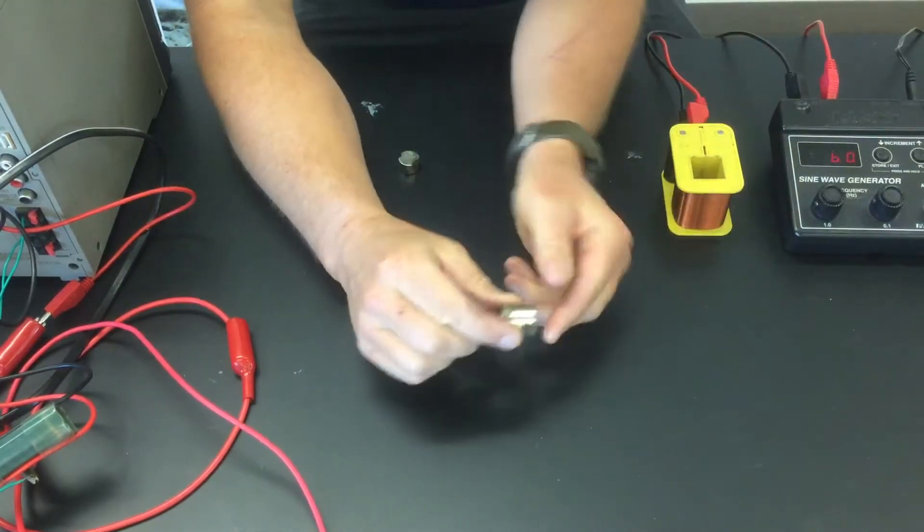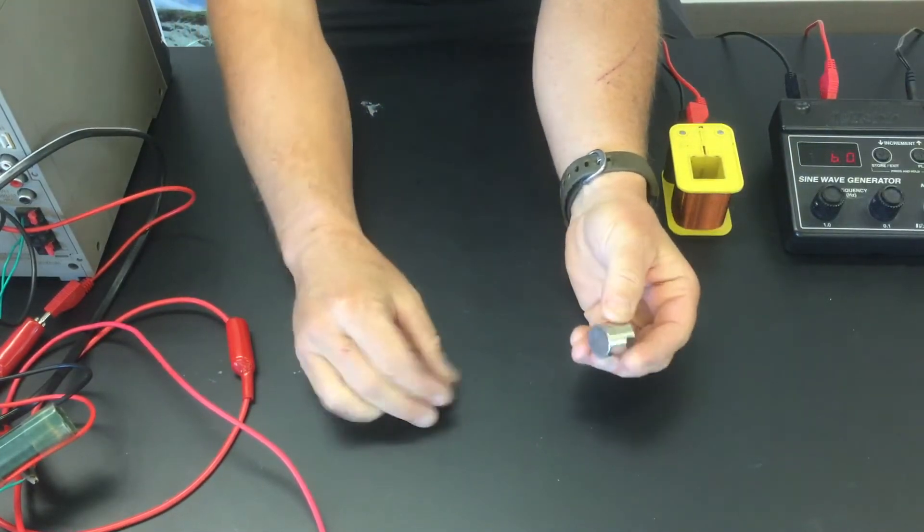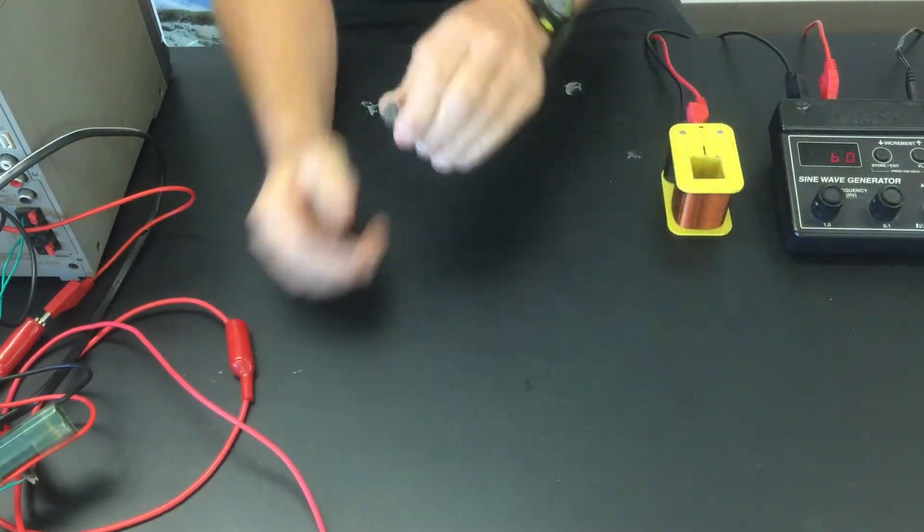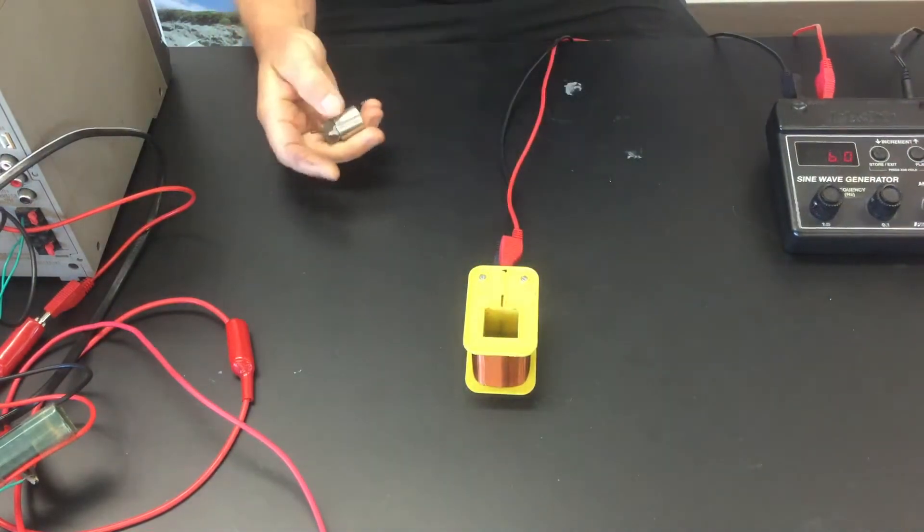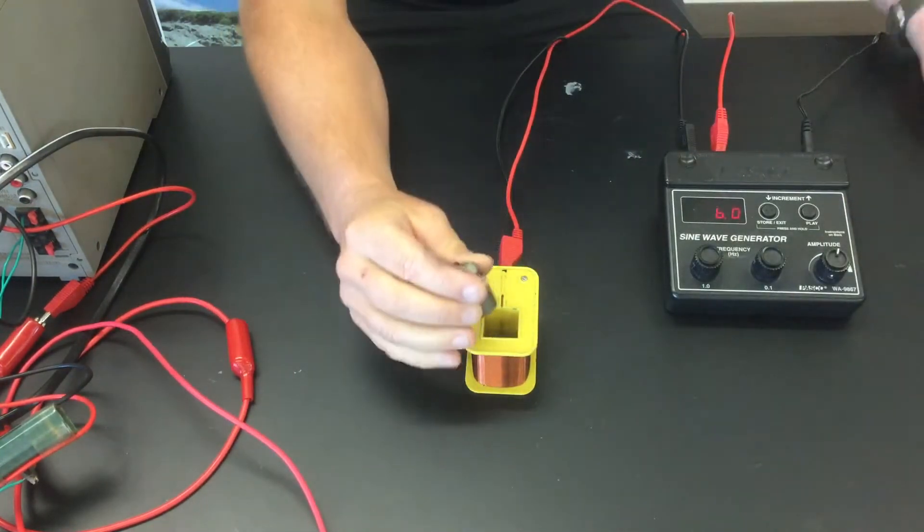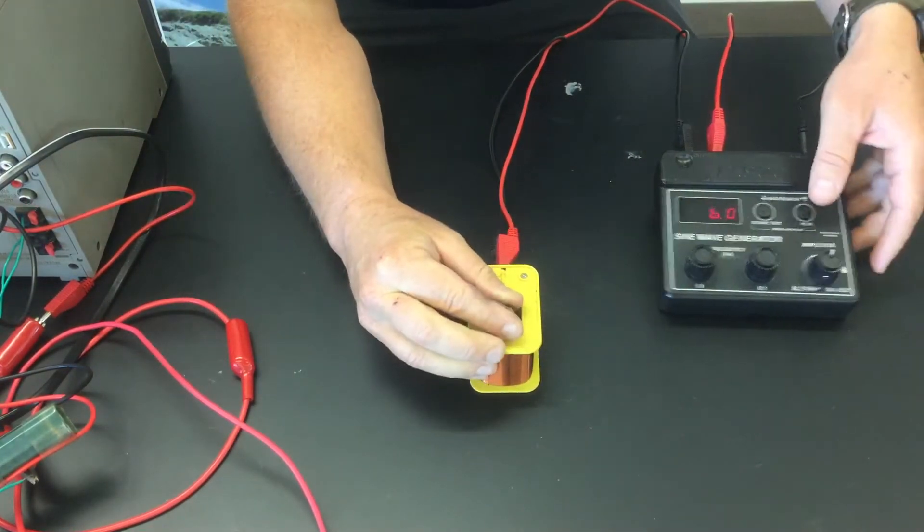Alright, so what you're looking at right here is actually a pretty strong magnet. Check this out! What we're going to do is take this magnet and put it inside of a little coil that has electric current running in it. So I'm going to drop this thing into the coil.